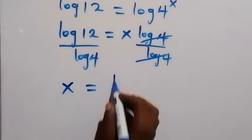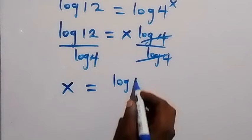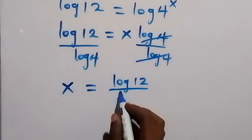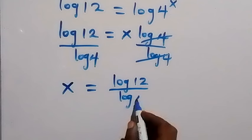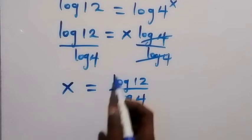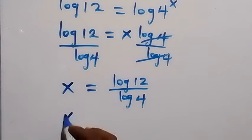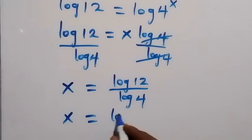Then we are left with x which we can write first here. We have x equals log 12 divided by log 4. From here we can also write log 12 as log 4 multiply by 3.